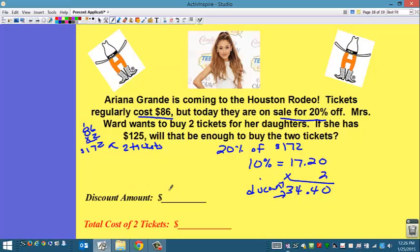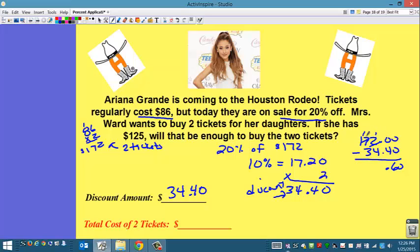What is the total cost of the two tickets? I need to subtract — discount means to subtract, it means the price is going to decrease. So $172 minus the discount of $34.40. I have to do a bunch of borrowing. 11 minus 4 is 7; 6 minus 3 is 3 — I get $137.60. Let me verify: 0 plus 0 is 0; 6 plus 4 is 10, carry 1; 8 plus 4 is 12, carry 1; 4 plus 3 is 7 and 1. I subtracted correctly. The total cost of two tickets is $137.60.